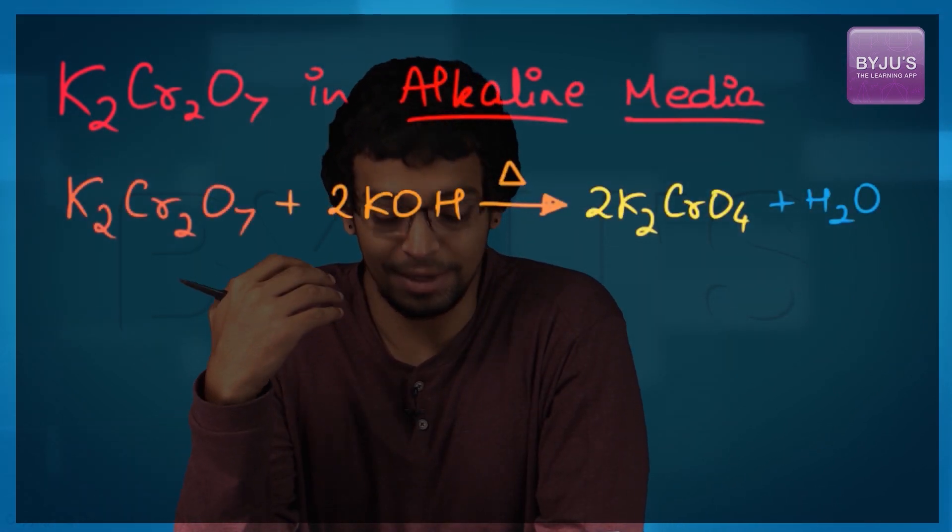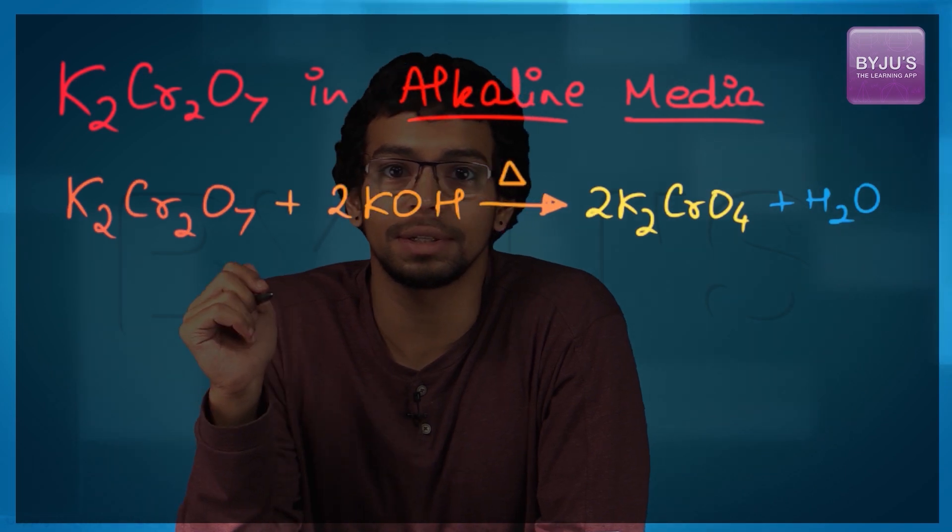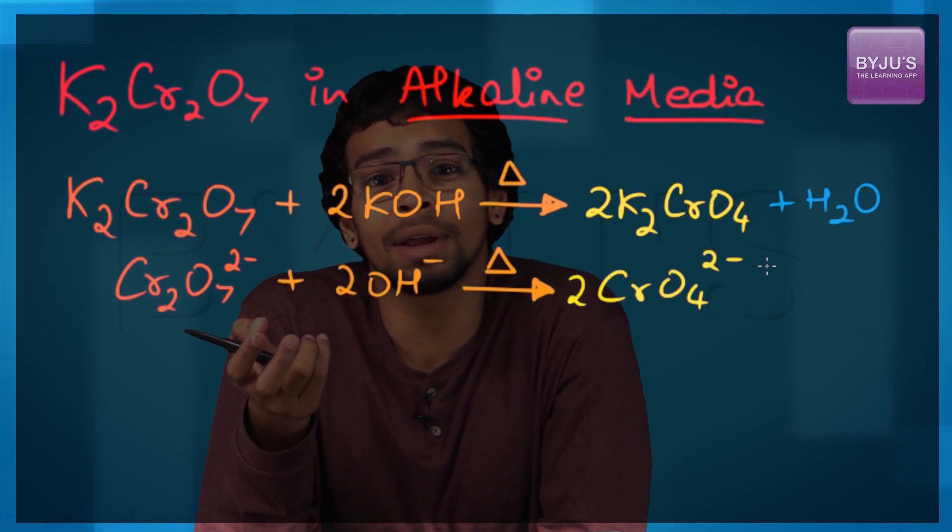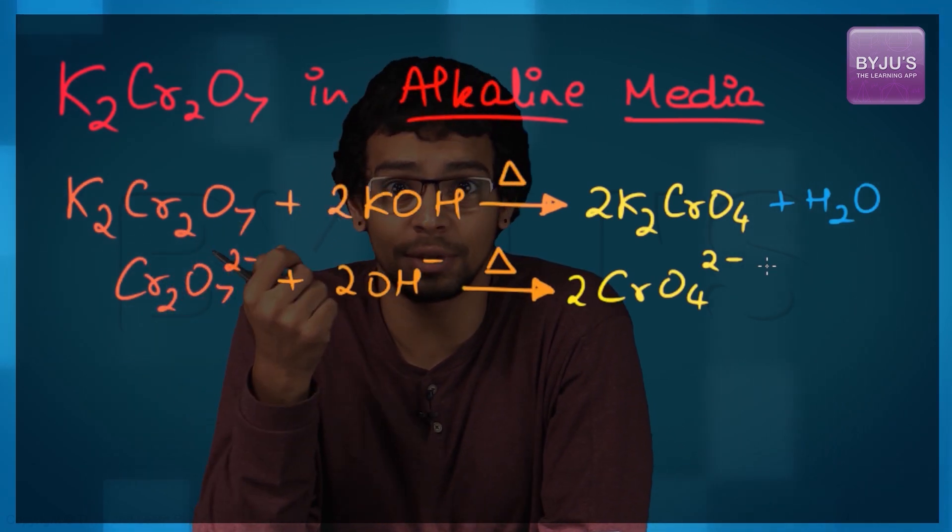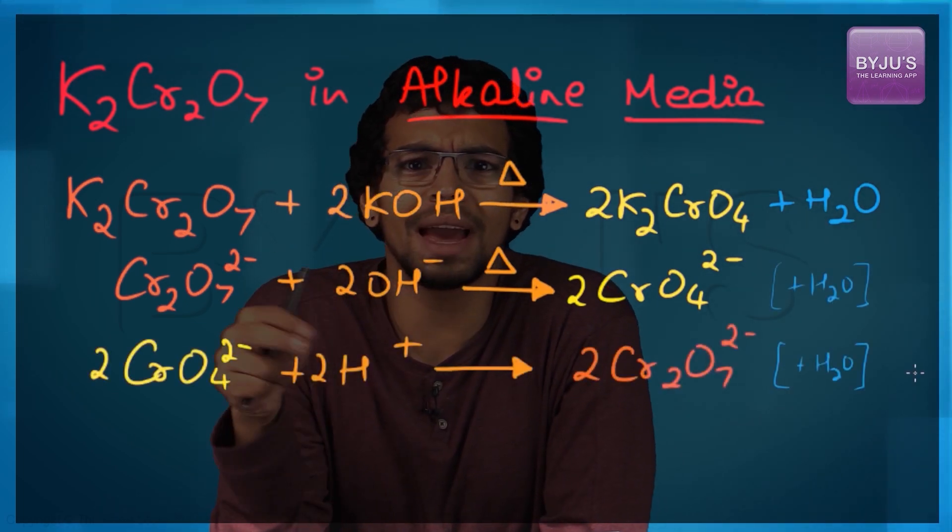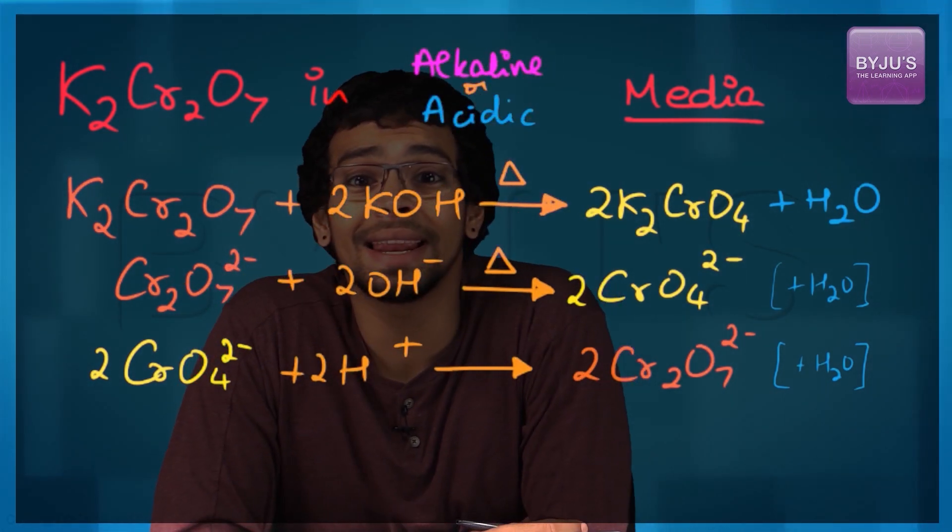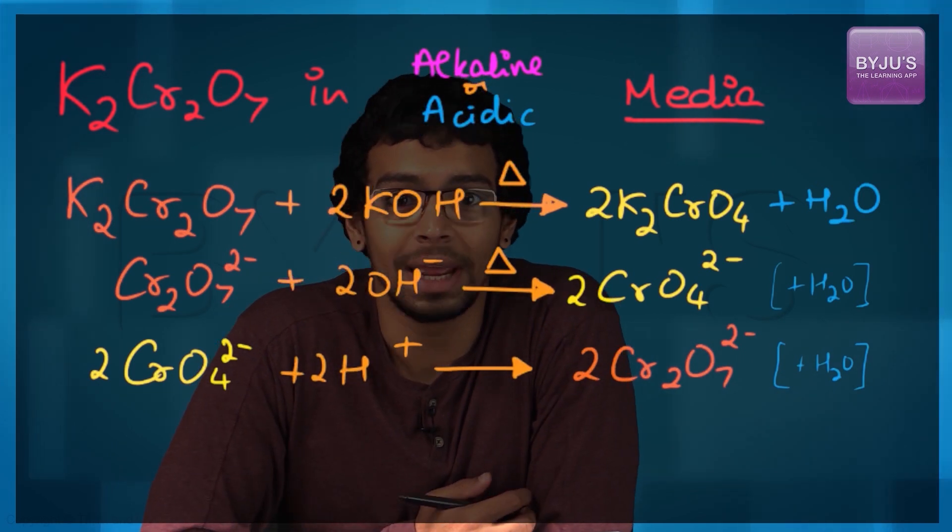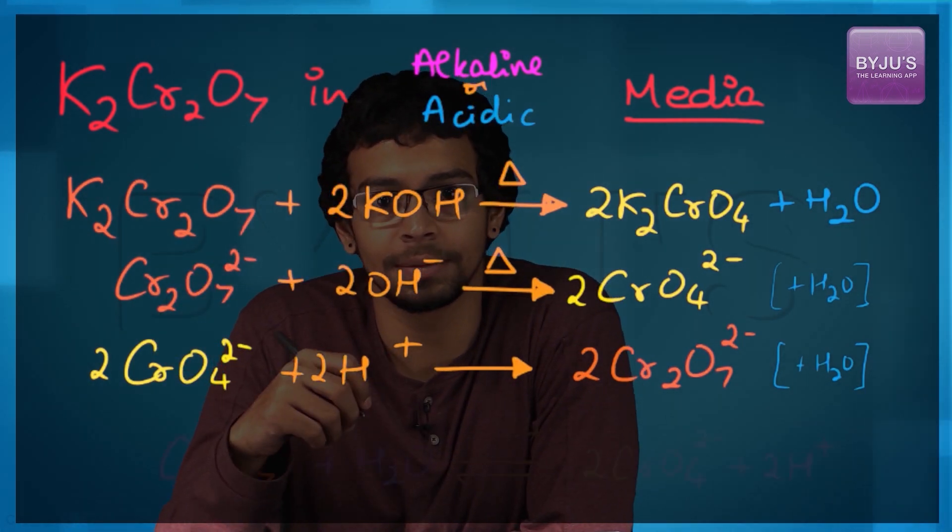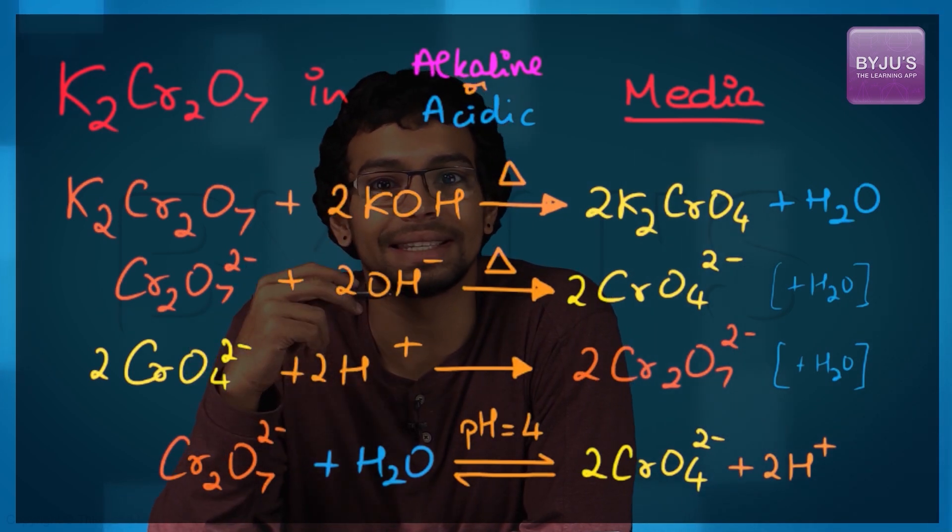In alkaline medium, potassium dichromate readily converts to potassium chromate. The orange coloration changes to yellow. The dichromate ion in the presence of OH- ions gives chromate ions. If we acidify the chromate ion, it produces orange colored dichromate ions. This indicates that in alkaline medium, chromate ions are present, and in acidic medium, dichromate ions are present. At pH 4, both dichromate and chromate ions exist in equilibrium.